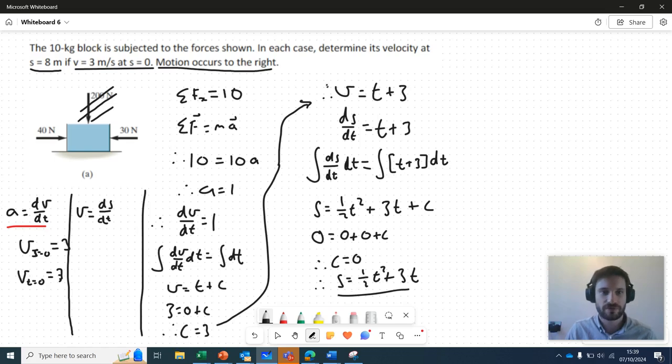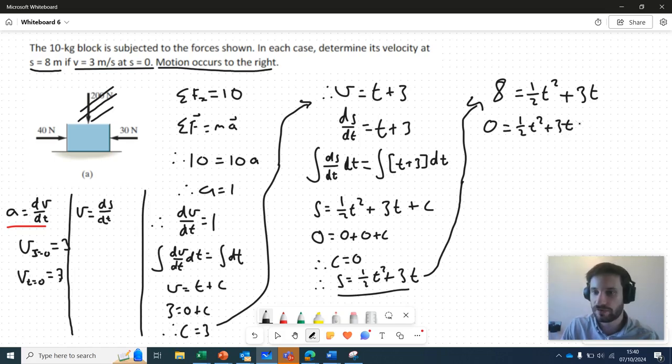So we have S in terms of T. We have V in terms of T. We're looking for V when S takes a value of eight. So let's substitute 8 in for S here. Let's look at the value for time when we've displaced eight. I'm going to subtract eight from both sides because I recognize that this is a quadratic. And if you want to solve a quadratic, it makes sense first to make one side equal to zero. I'm going to multiply both sides by two here just to get rid of this half coefficient.